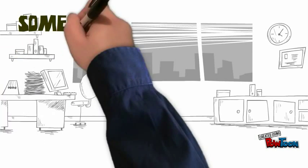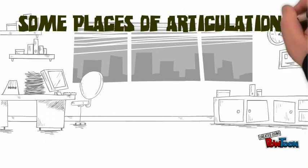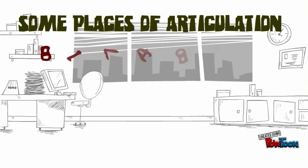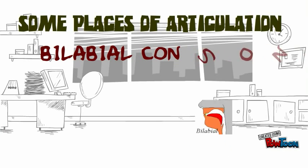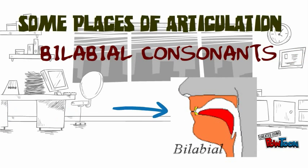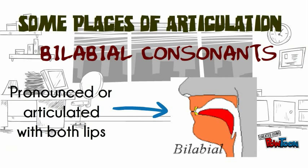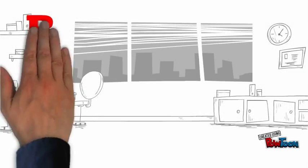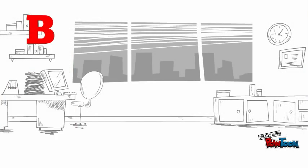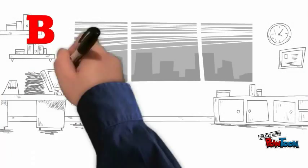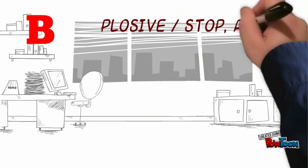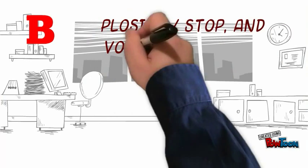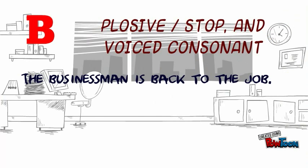Some places of articulation by bilabial consonants. This is pronounced with both lips. For example, B — this is a plosive, stop, and voiced consonant.